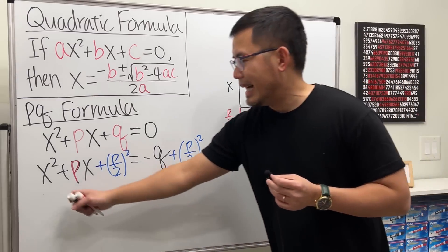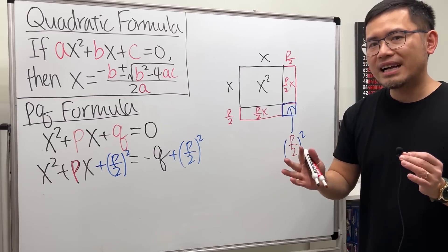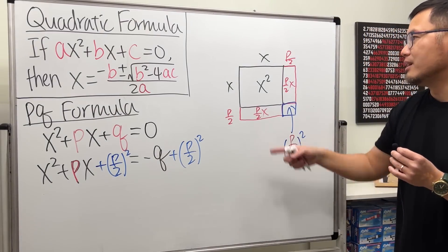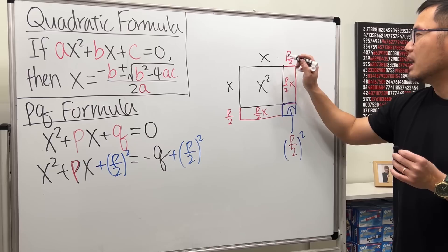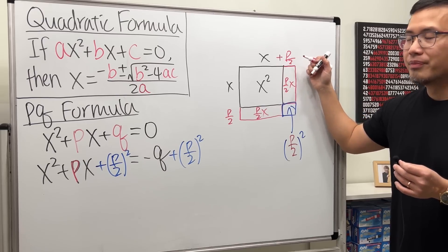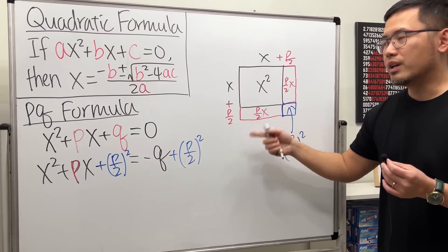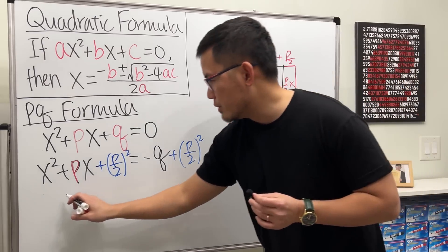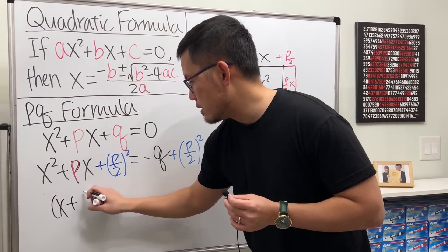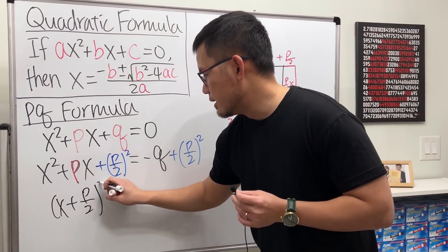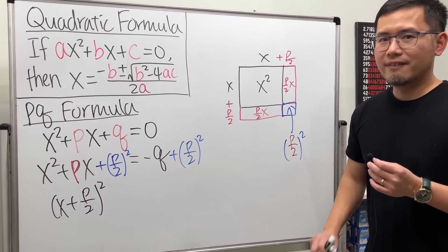Then, as you can see, on the left-hand side, we can factor it. And you know the factoring already. It's just x plus P over 2 times x plus P over 2. We can just write it as x plus P over 2, the quantity squared. Just like that. Very nice.